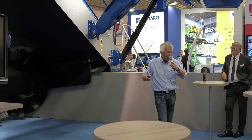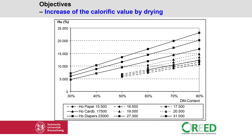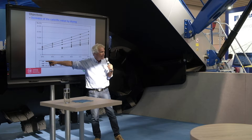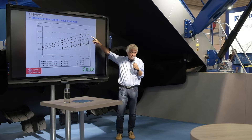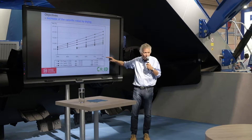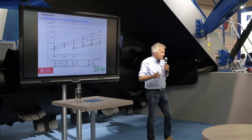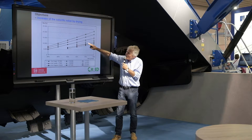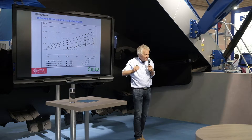What happens to the calorific value of different waste components? Take paper: it starts at 5,000 kJ per kilogram at 30% dry matter, meaning 70% water. When you lift the dry matter to 80% — reducing water content from 70% to 20% — you lift up the calorific value by around 15,000 to 20,000 kJ. The same applies to diapers: by reducing the water, you lift up the calorific value. A very simple system.